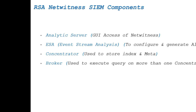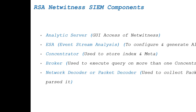The fourth component is the Broker. Suppose you have configured a report and want to run it, but you are using more than one Concentrator. You need to execute the same query on multiple Concentrators simultaneously — in that scenario you need a Broker. When you install the Analytic Server, the Broker service is included within it, but in scenarios with a larger number of devices, you can deploy a separate Broker. The Network Decoder, as discussed, is responsible for collecting packets from SPAN traffic using a monitor session, while the Log Decoder is responsible for collecting logs from different devices.